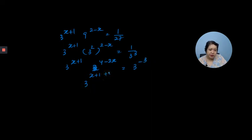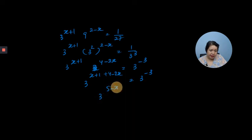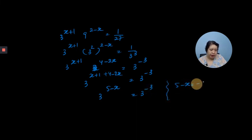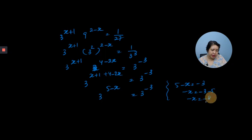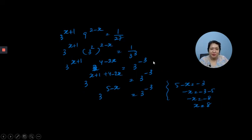Combining exponents: x plus 1 plus 4 minus 2x equals minus 3. Simplifying: 5 minus x equals minus 3, so x equals 5 plus 3, giving x equals 8. Therefore x minus 3 equals 5 — this is the final solution.